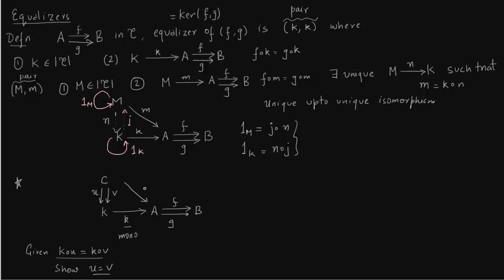The morphism from C to A can be written as k∘U or k∘V, and we are given they are equal. Think of C as the object M from the diagram above, and m as k∘U. By the uniqueness of the arrow N in the diagram, we conclude U = V, which is what we had to show.